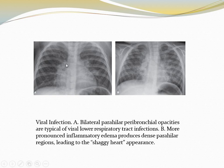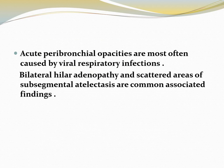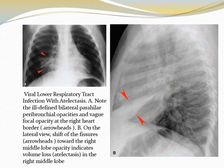Bilateral peribronchial opacity on PA view is typical of viral respiratory tract infection. More pronounced inflammatory edema produces a dense perihilar region leading to the shaggy heart appearance. Acute peribronchial opacities are most often caused by viral respiratory infections. Bilateral hilar adenopathy and scattered areas of subsegmental atelectasis are common associated findings. In this case it is associated with atelectasis, where the fissures are displaced, indicating atelectasis of the middle lobe.